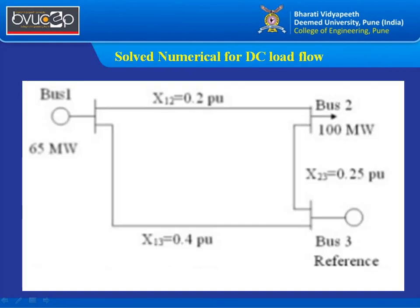Now let us solve a numerical example. Consider a three-bus system where bus 1 has a generator of 65 MW, bus 2 is connected to a load of 100 MW, and bus 3 is the reference bus. There are three transmission lines: reactance between buses 1 and 2 is 0.2 per unit, between 1 and 3 is 0.4 per unit, and between 2 and 3 is 0.25 per unit. Taking base as 100 MVA, the generator at bus 1 becomes 0.65 per unit and the load at bus 2 becomes 1.0 per unit.